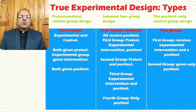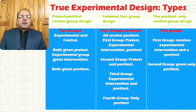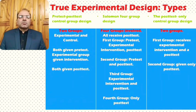The last sub-type is the post-test only control group design, involving two groups. The first group receives experimental intervention and a post-test, while the second group — the control group — receives only the post-test. There is no pre-test in this design, which is why it is called the post-test only control group design. This seems less rigorous in comparison to the Solomon four group design.